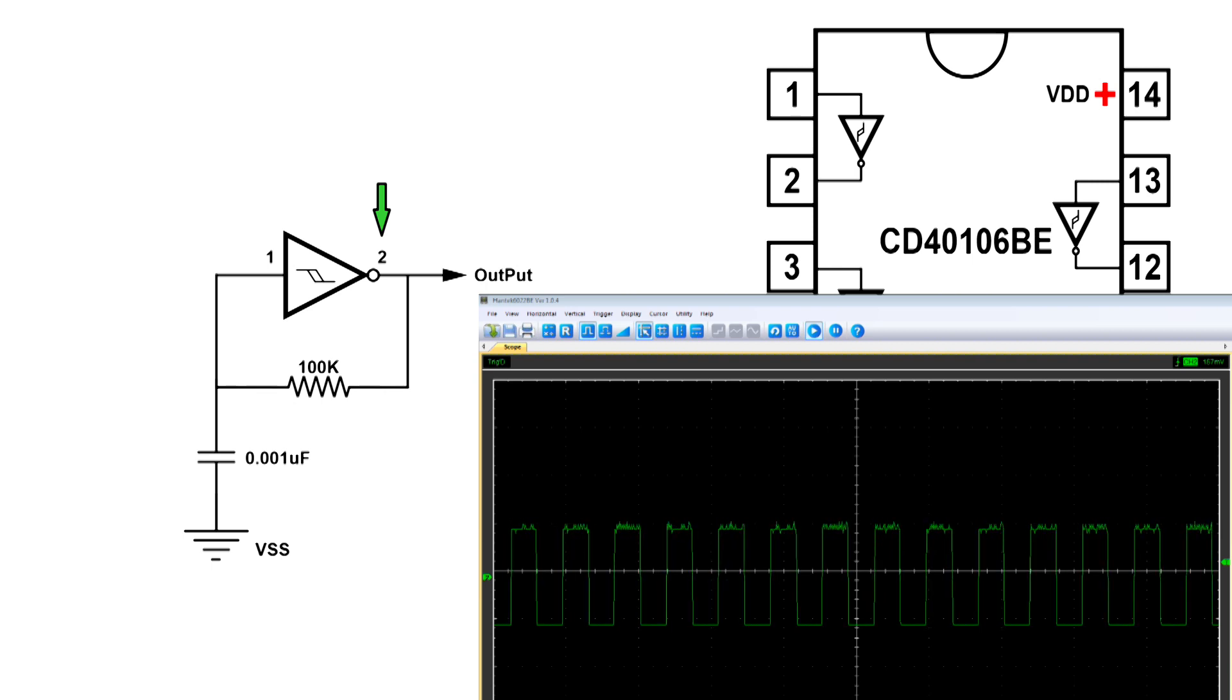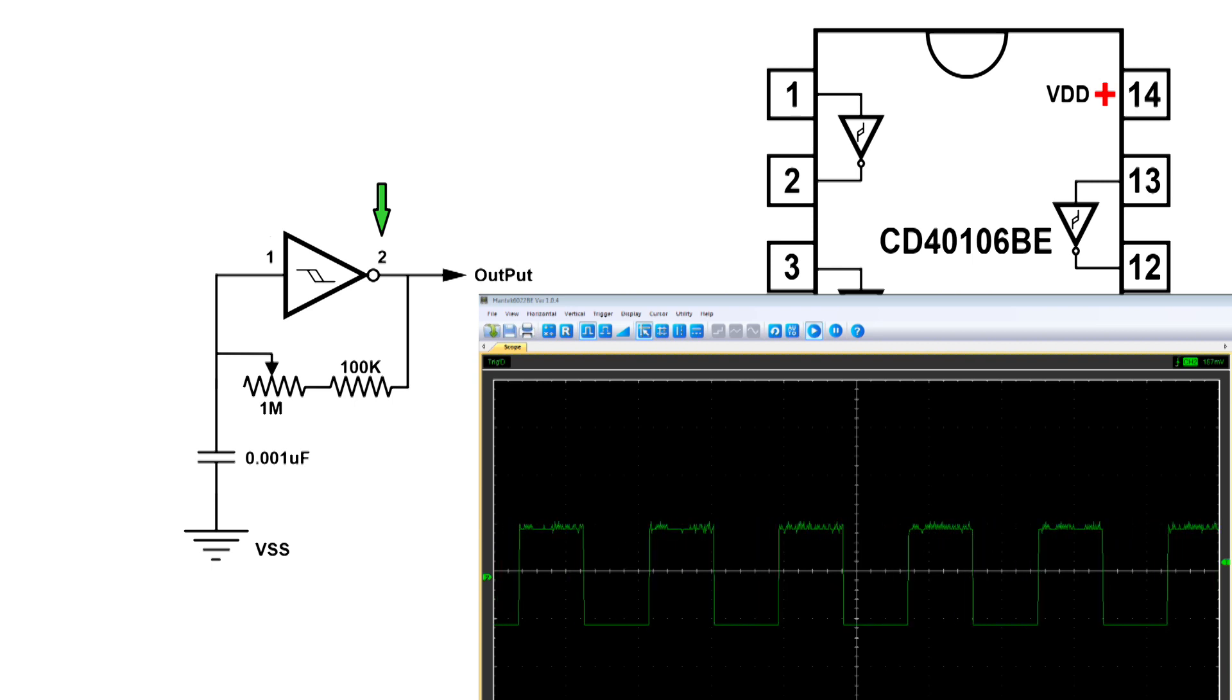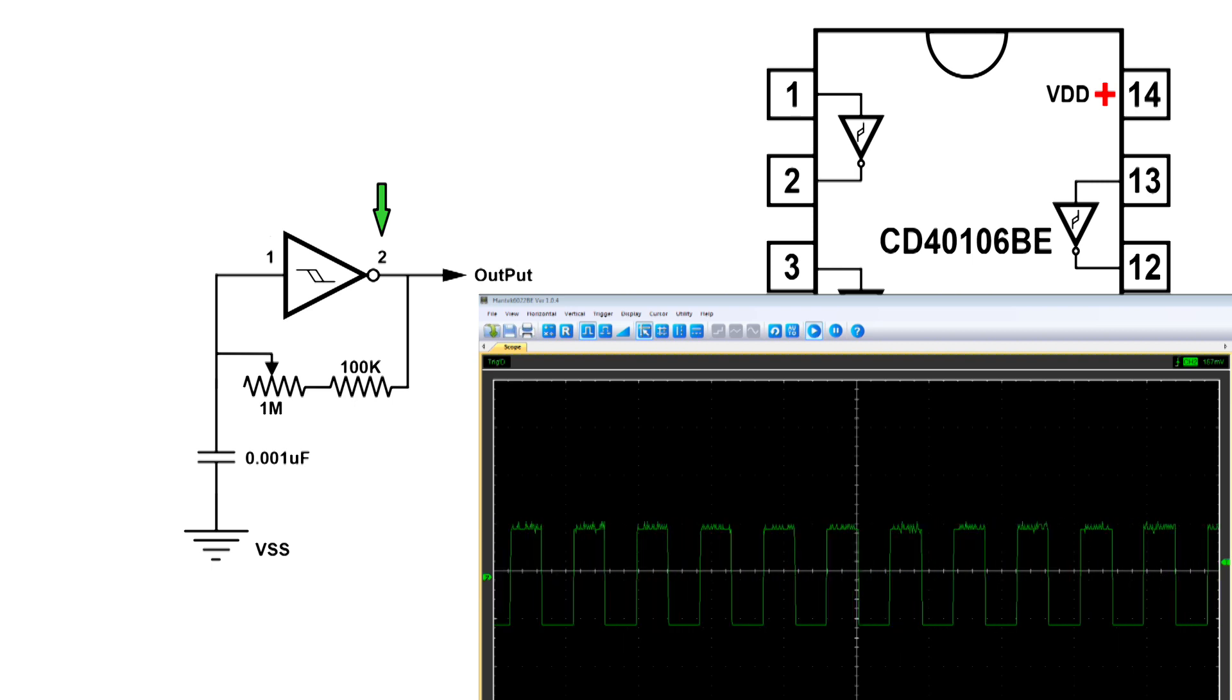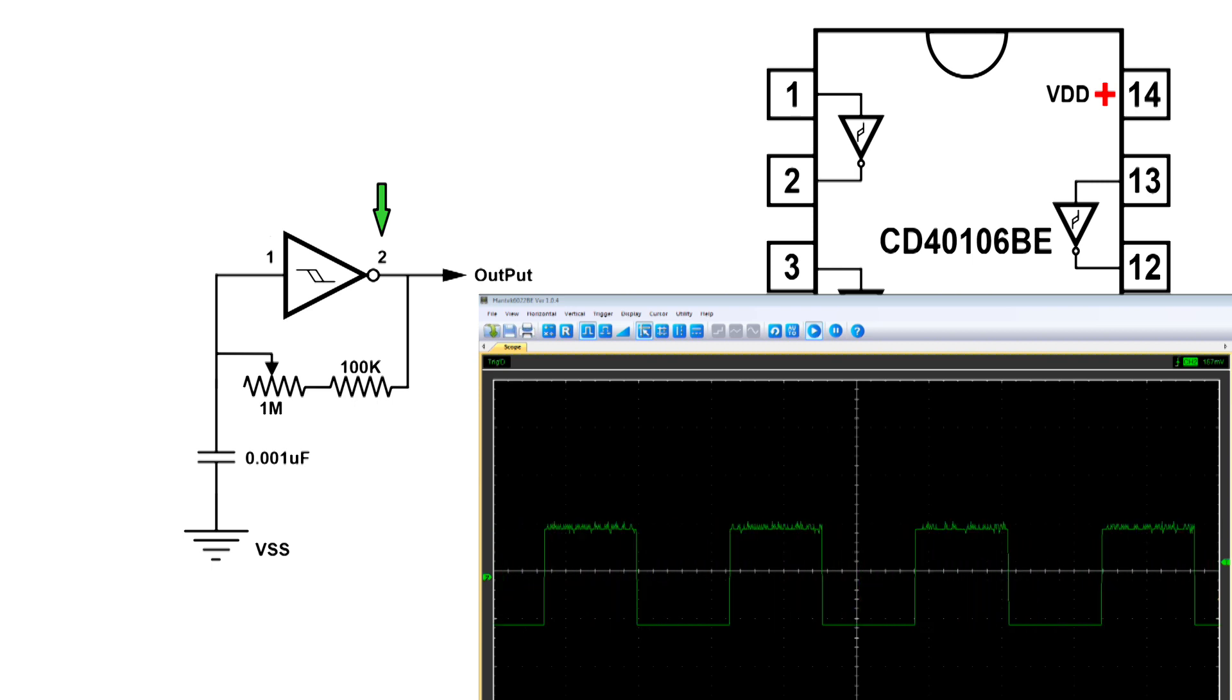Now I'm going to add a 1 meg resistor into this. Let's get in there. Alright, I think we've got it wired right. Yes, we do. Okay, so now I can vary it up to our 100k to a much lower frequency.